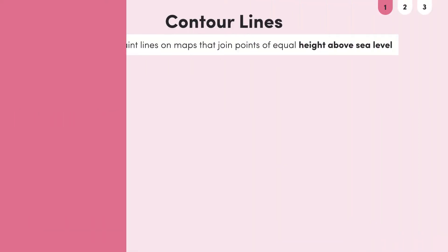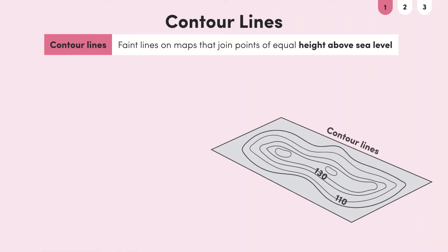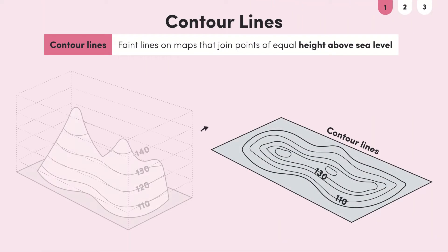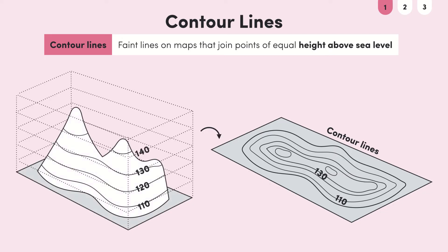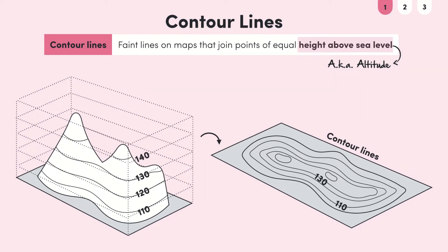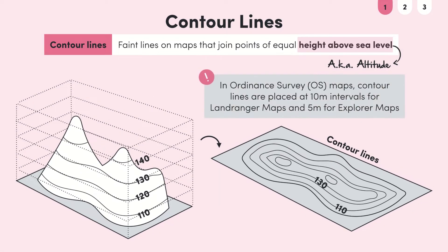Contour lines are faint lines on maps that join points of equal height above sea level. Height above sea level is also known as altitude. In Ordnance Survey maps these contour lines are placed at 10 meter intervals for Landranger maps and 5 meters for Explorer maps.